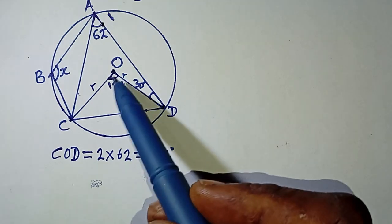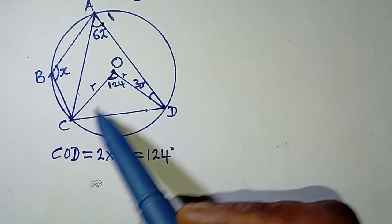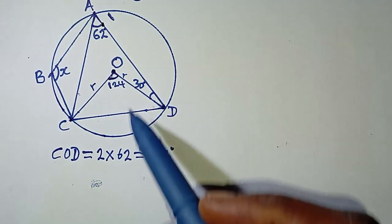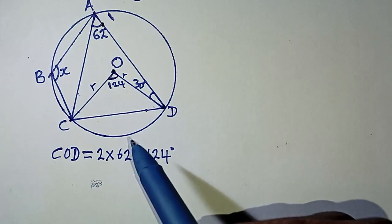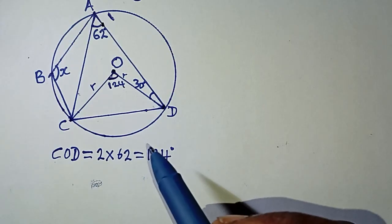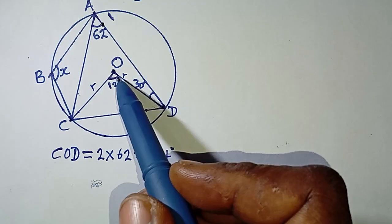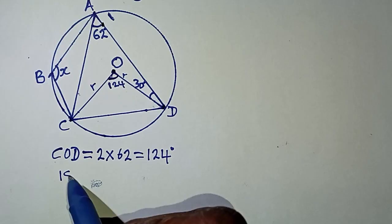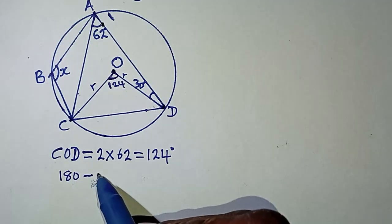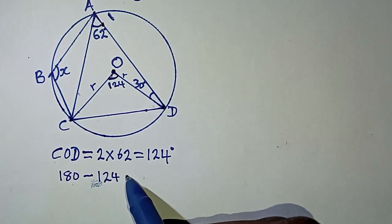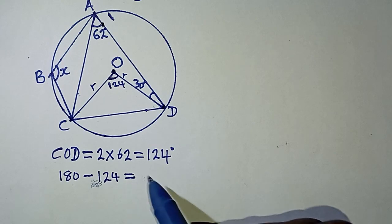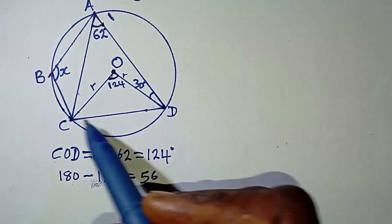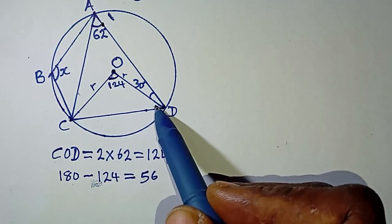Using the sum of angles in a triangle: if we add both base angles and 124°, it should give us 180°. So the sum of the two remaining angles is 180 minus 124, which gives us 56°. The sum of those two remaining angles equals 56°.